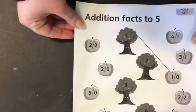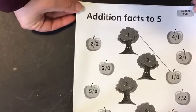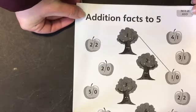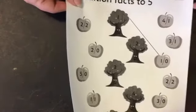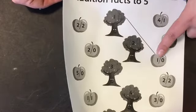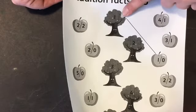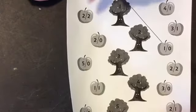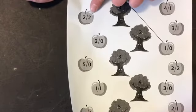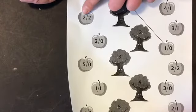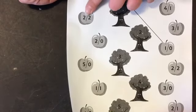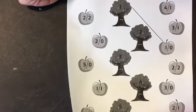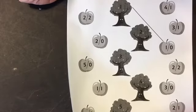Here are some more addition facts to five. So we have got to match the apples to the trees. One of them has been done for you — one and zero makes one. I wonder what two and two makes. One, two, three, four. I would draw an arrow down to number four.